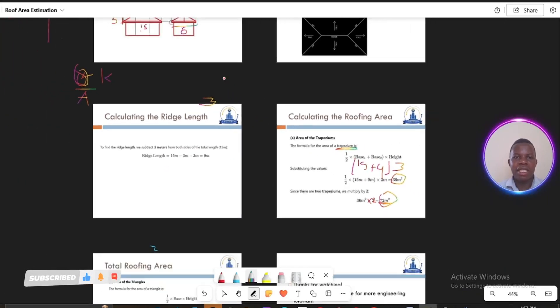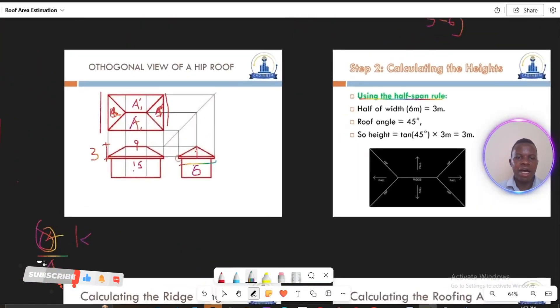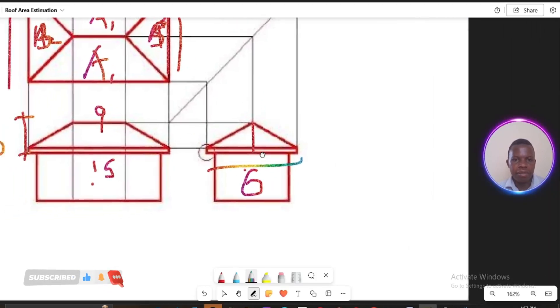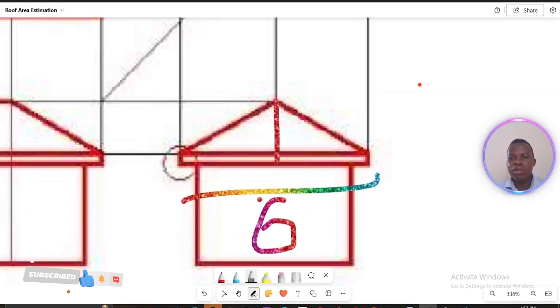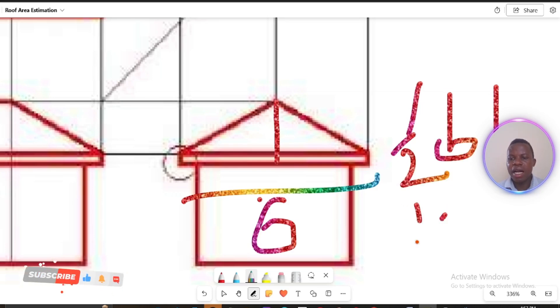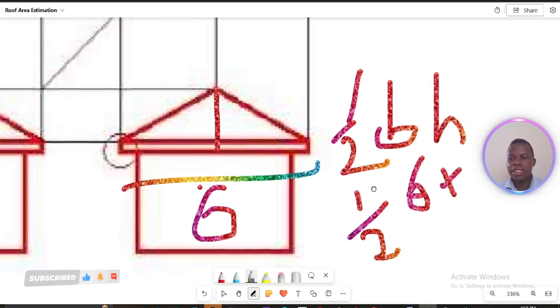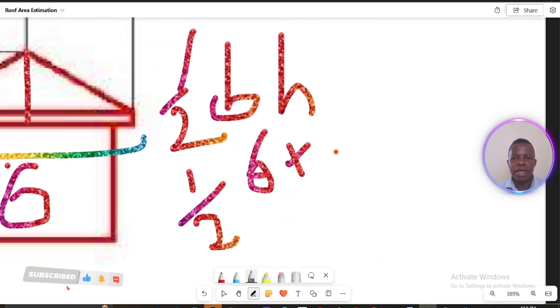Then the other side that you'll be looking at is this area of a triangle. So this one will also be ½ base × height, whereby it's ½, what's the base here? The base is 6, you multiply by the height which is 3.